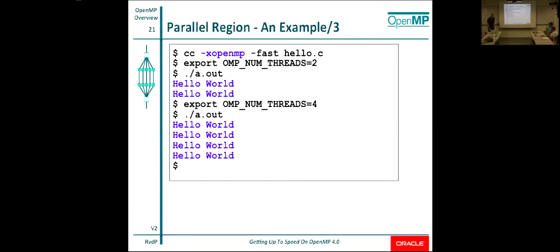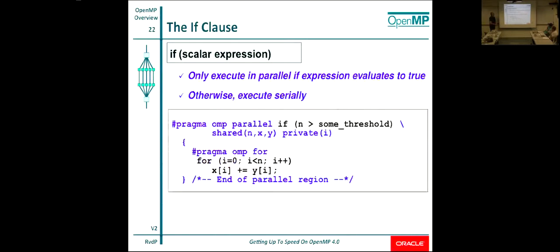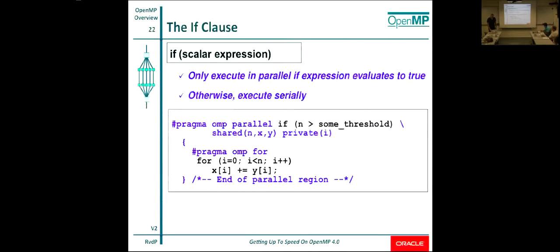One thing I like about OpenMP is the IF clause. You can write #pragma omp parallel if followed by a condition that evaluates to true or false. If it evaluates to true, you go parallel; if it evaluates to false, you still run but on one thread. The key use is: if my data set is too small, I don't want to run in parallel. So if the loop length only exceeds some threshold, I'll actually execute in parallel. That way you have one source that runs efficiently on both small and large sizes.